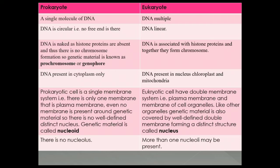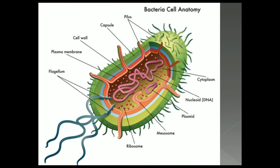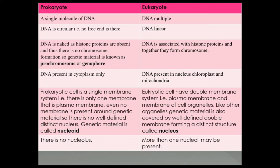In the case of a prokaryotic cell, the first difference is there is a single molecule of DNA. We can observe in this slide that in the center, DNA is present in the form of a loop — it is a single piece of DNA. In the case of eukaryotic organisms, the DNA is present in the form of multiple units. For example, in the case of human beings, there are 46 threads of DNA. But in the case of bacteria, it is a single thread.